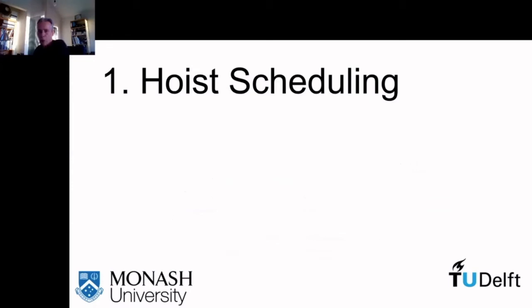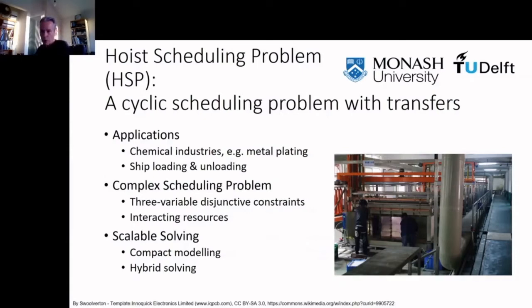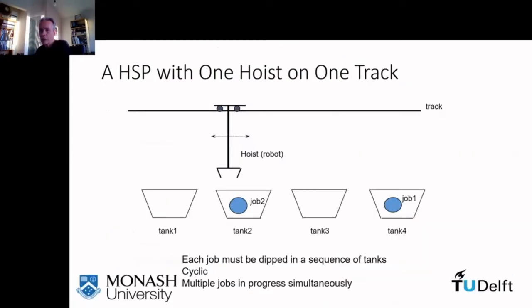Hoist scheduling is a widely studied cyclic scheduling problem in which the robots are hoists on an overhead line or track. It is used in production where a sequence of treatments are performed on the product in a sequence of tanks. Models of the hoist scheduling problem suffer from complexity and therefore lack of flexibility and scalability. Larger problems often rely on heuristic approaches. Here we have a hoist scheduling example where two jobs are in process with just one hoist doing the transfers.